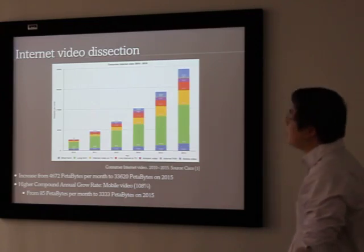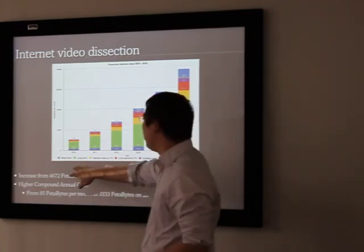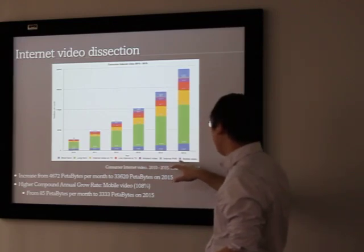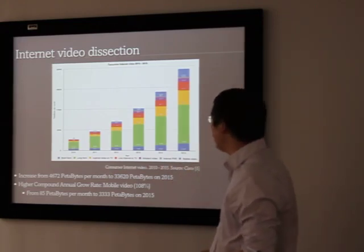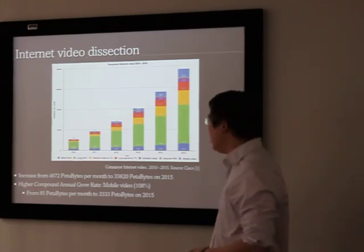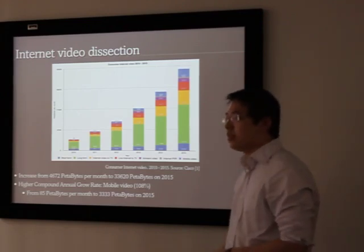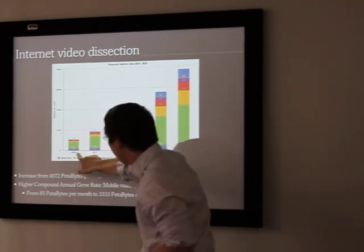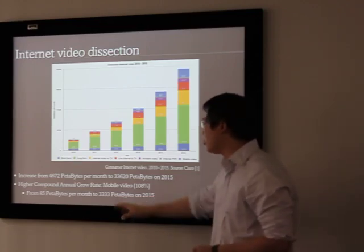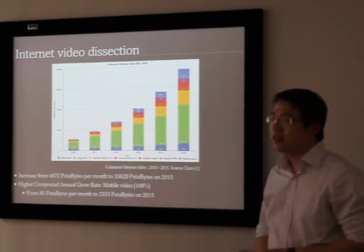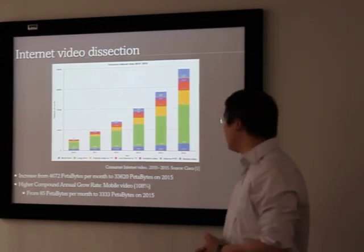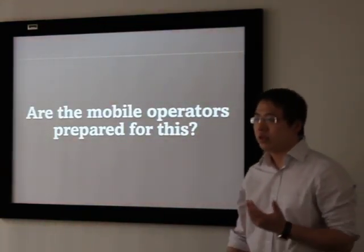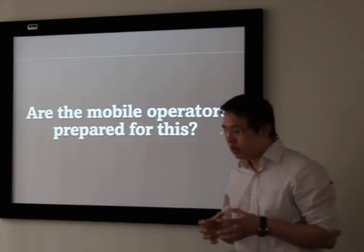If you go a little bit deeper, we can see the internet video section classified by short form, long form, internet video on TV, live internet TV, ambient video, internet video P2P, and mobile videos. This last one is especially interesting because the compound annual growth rate is the fastest one, 108%. This means that it duplicates every year. By 2015, it's going to be like 3,333 petabytes, which is a lot of data. The question now maybe is, are the operators prepared for this? Do they have enough infrastructure or resources to manage this kind of huge data traffic?